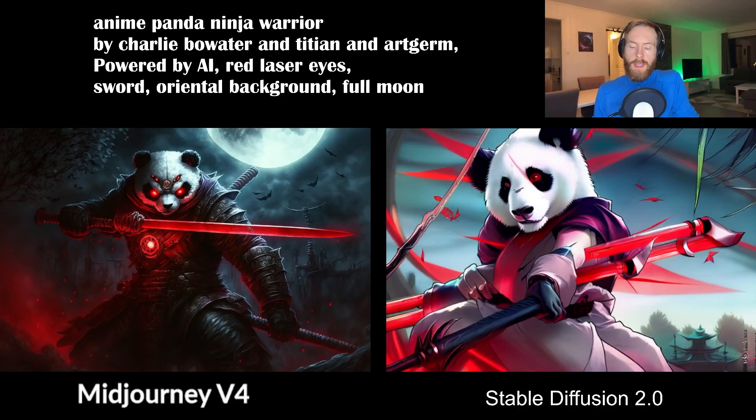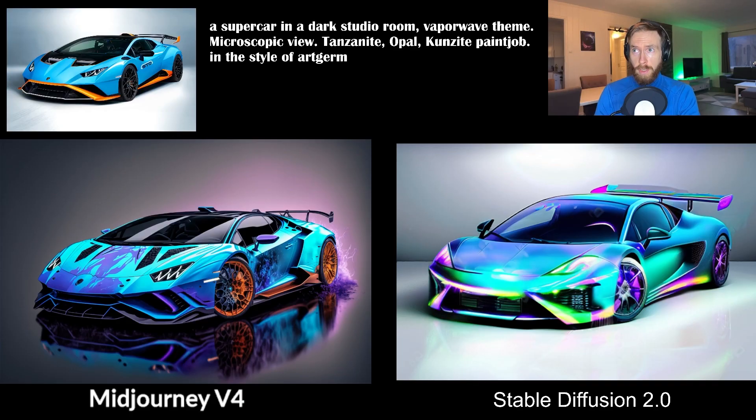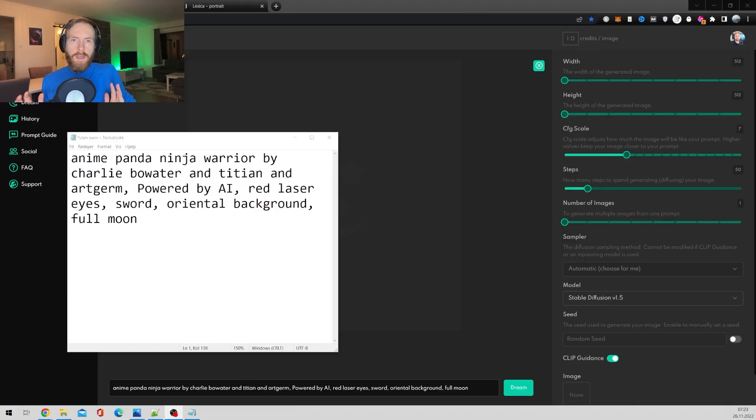Today we are looking at the new Stable Diffusion 2.0 and comparing it with MidJourney v4 using the same prompts, and we will be testing out the image-to-image function. I'll be picking prompts from lexica.art in this comparison. Anyway, let's just dive in.